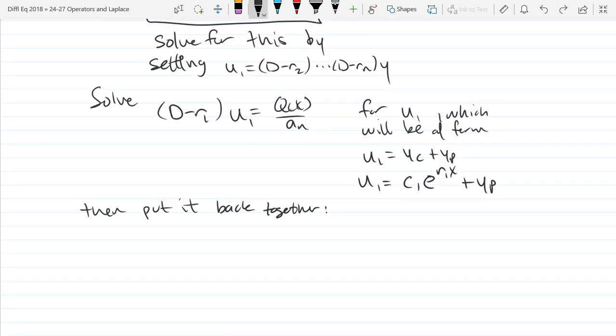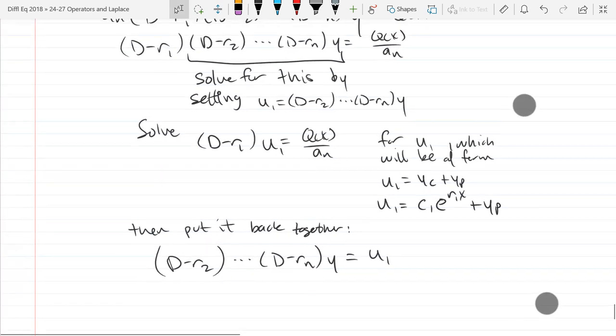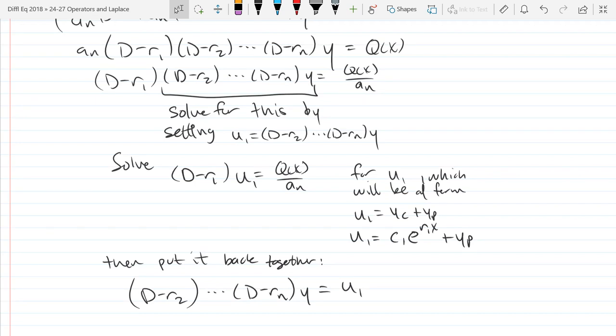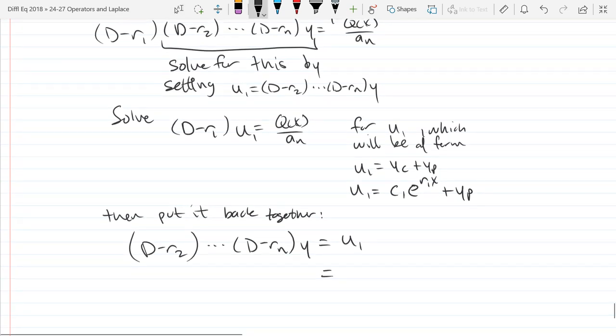So we put it back together. We're going to have (D minus r2). That r1, (D minus r1) is going to have disappeared. (D minus rn) y equals u1.